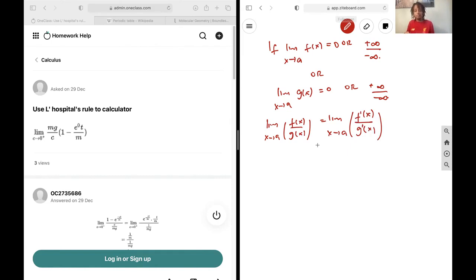that on the question that we've been given here. We have the limit as c approaches zero from the positive end of mg over c into one minus e to the power of negative ct over m.